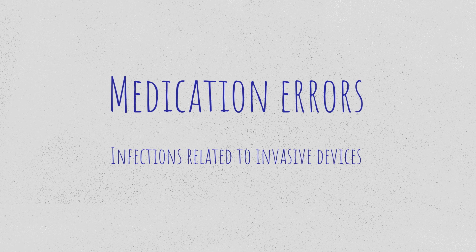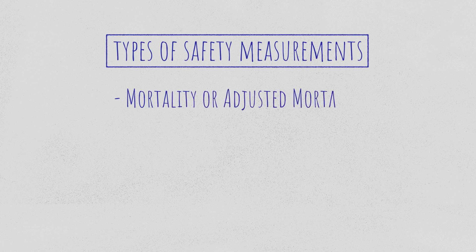So if we want to monitor safety in the ICU, we can monitor three types of measures. The first one is to monitor the outcome of patients. Mortality or adjusted mortality is a very important outcome, and a high adjusted mortality is saying that probably our patients are suffering from adverse events.